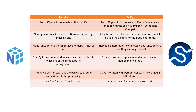NumPy is useful for operations like sorting and indexing, but when it comes to SciPy it can handle even more complex operations. Many functions are available in NumPy but the level of depth is not that much, whereas SciPy has many functions that are in-depth too.